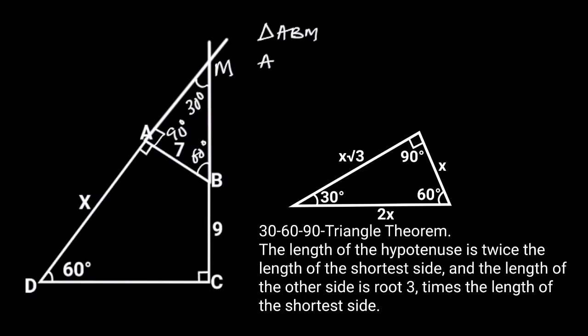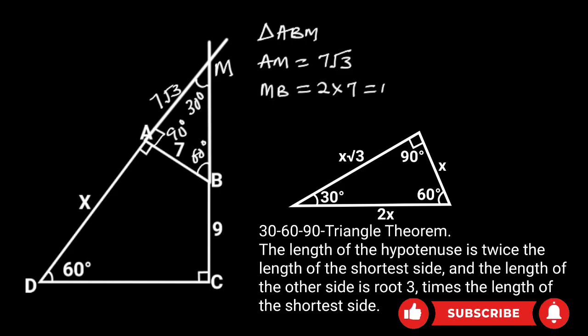It follows that AM is equal to 7 root 3. And MB is equal to 2 times 7, which is equal to 14.